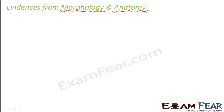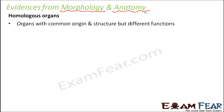Looking at the structure of various organisms, certain evidences were found which told us that evolution existed. Let us talk about homologous organs — these are organs with common origin and structure, but they play different functions. These organs actually tell us the evolutionary relationship between different species, because in organisms belonging to different species, certain parts are similar in structure and have similar origin, but perform different functions. This shows they might have originated from the same ancestor.